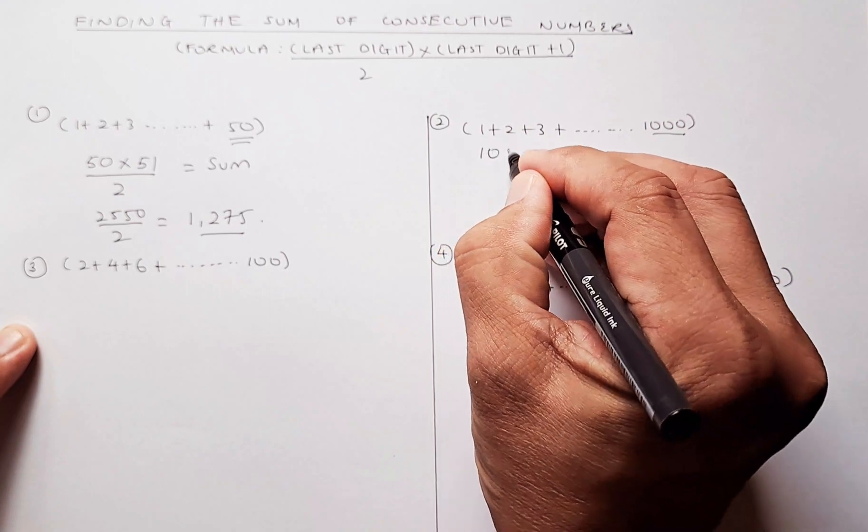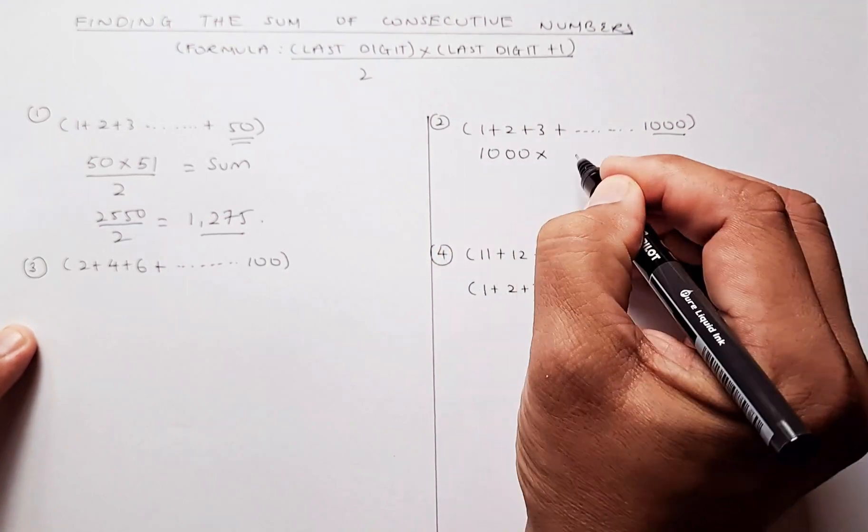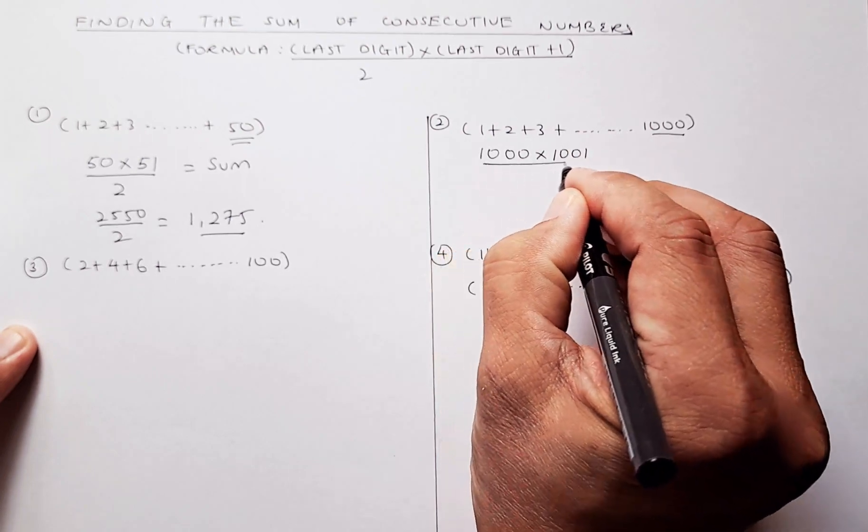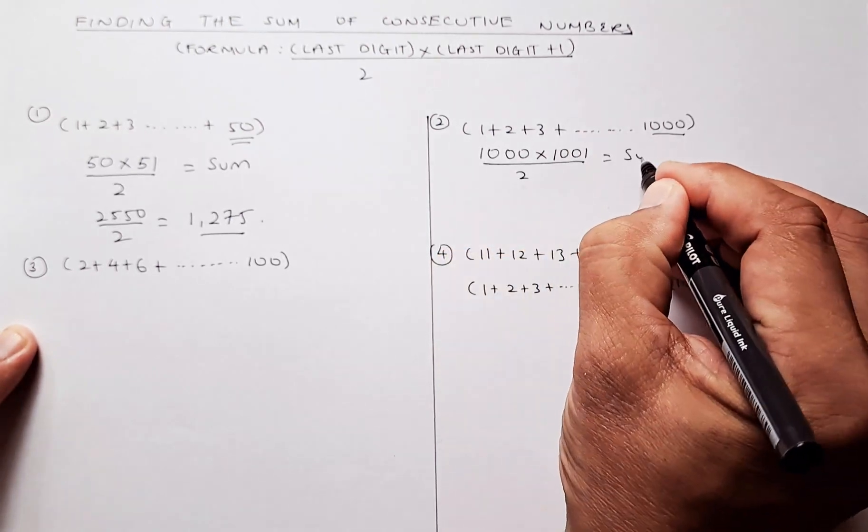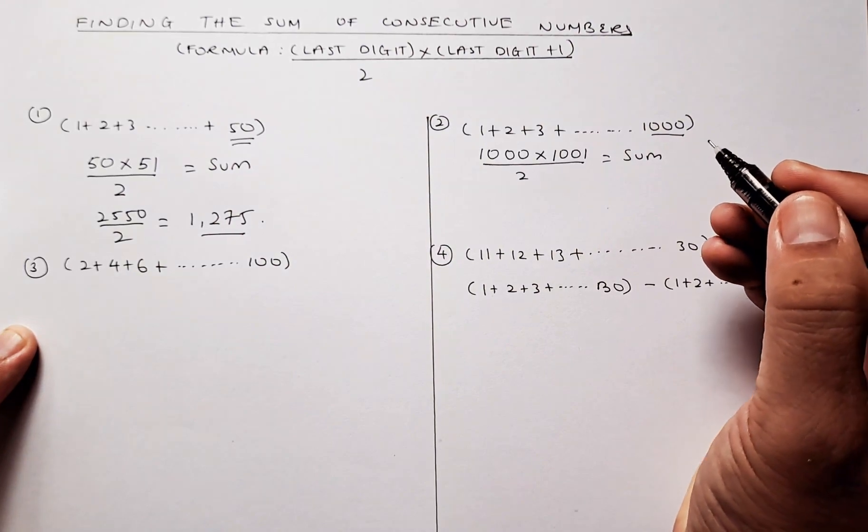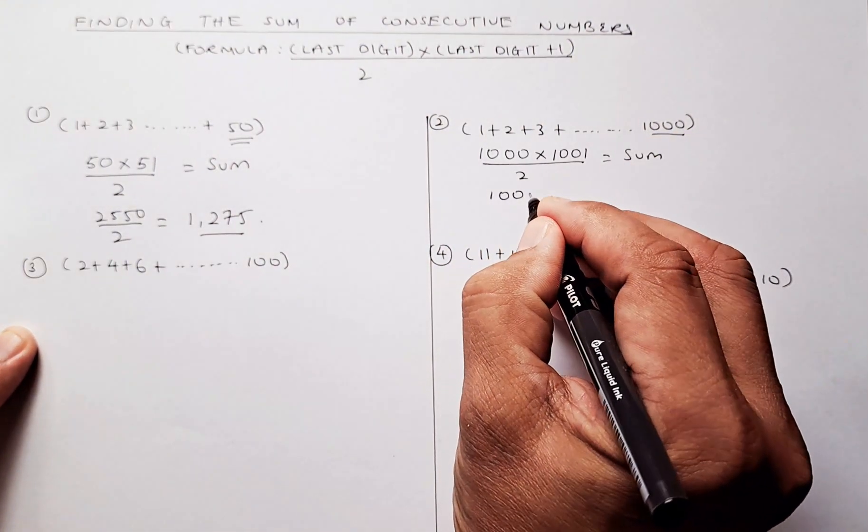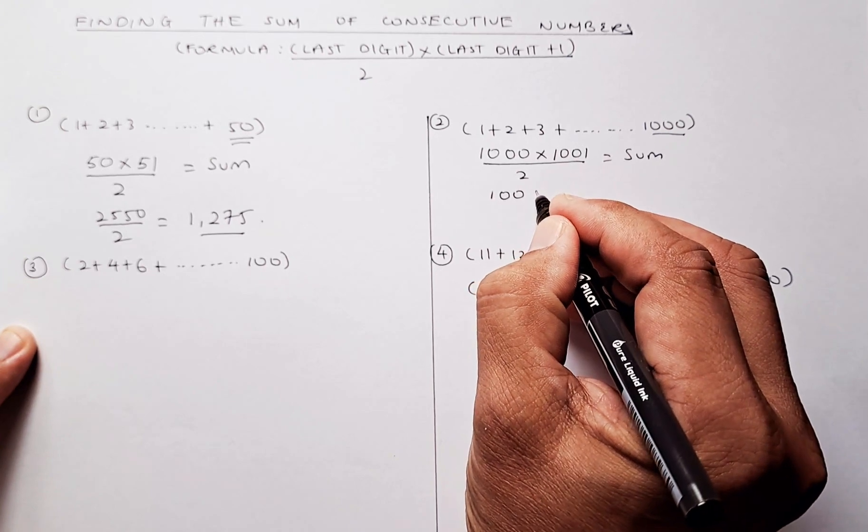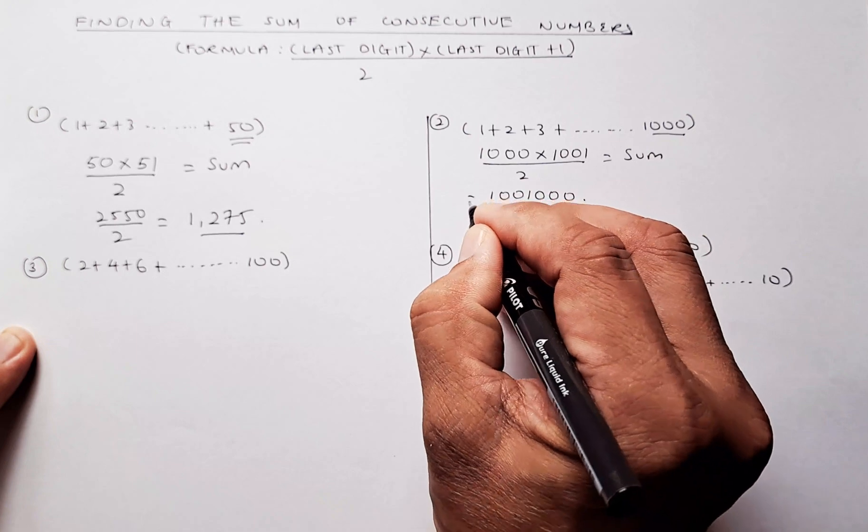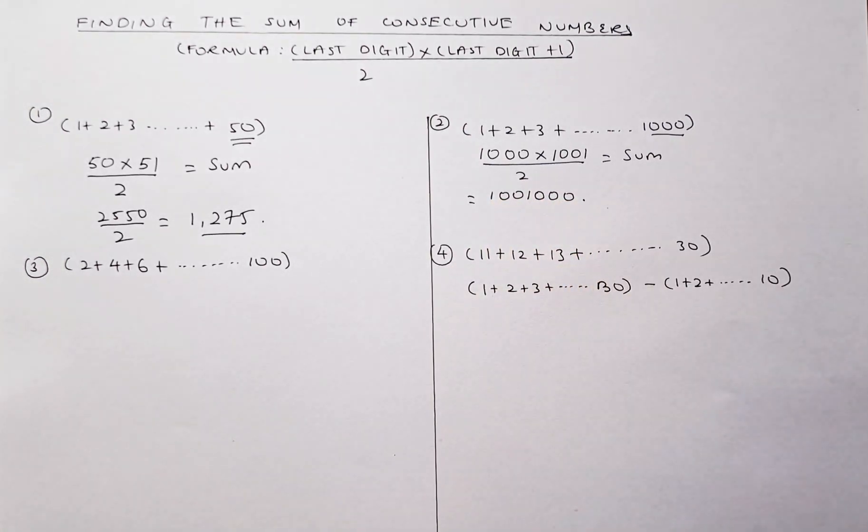So it's going to be 1,000 multiply by the next number or plus 1, it'll be 1,001. And you divide by 2. That will be the sum. If you put in your calculator, the answer is going to be 1,001,000. Check with the calculator and tell me whether I'm right.